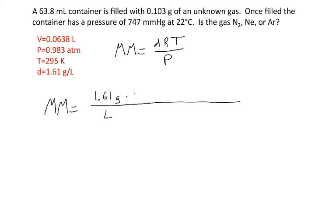And that's 0.0821 liters times atmospheres over moles times Kelvin. So I need to put the moles times Kelvin in the denominator. I need to multiply by T, so times 295 Kelvin. And then finally, I need to divide by the pressure, so 0.983 atmospheres.